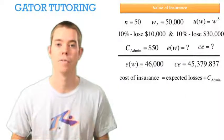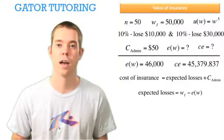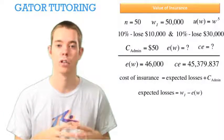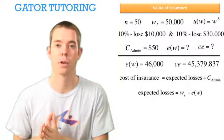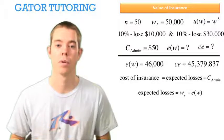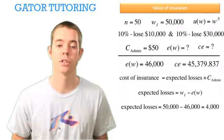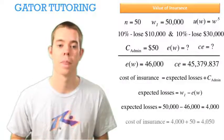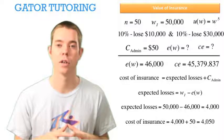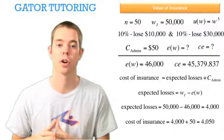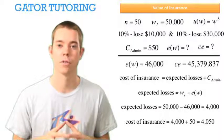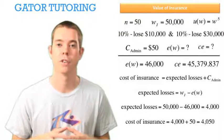We need to find what the cost of insurance is, starting with the expected losses. Expected losses equal the initial wealth minus the expected wealth. The initial wealth was $50,000 and the expected wealth was $46,000, so expected losses for the firm are $4,000. The cost of insurance is that $4,000 plus the administration cost of $50, so the total cost of insurance charged by the firm is $4,050.